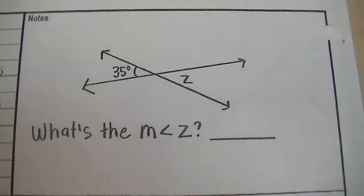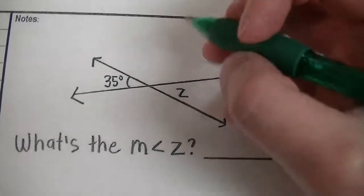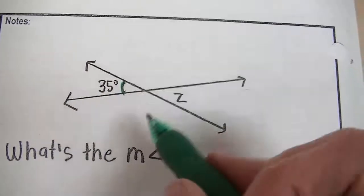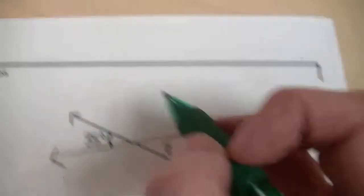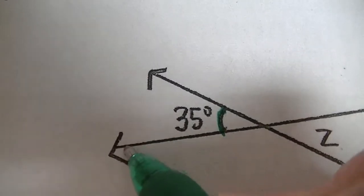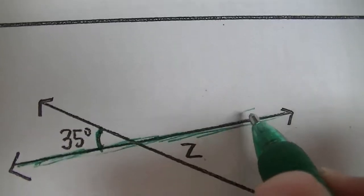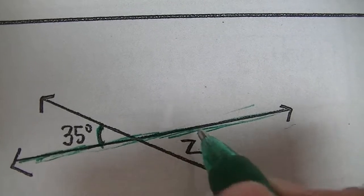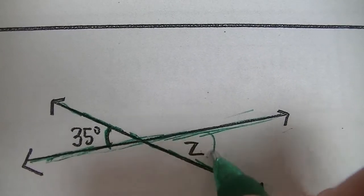The next page asks you to find the measurement of angle Z. We're given this 35-degree angle, and I want to check whether Z and this 35-degree angle are vertical angles. Here's how you check: trace the line of the 35-degree angle — notice it goes straight across without bending. It lines up with angle Z, and tracing the other side also goes straight. Therefore, angle Z and this 35-degree angle are vertical angles.